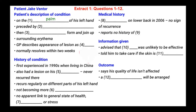The next question is preceded by blank, so we can understand that before the sore comes on the palm of his hand, something else appears. The patient says that he always knows when he's going to get it because he has an itching before it appears. So the answer to number two is preceded by itching.